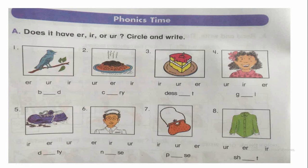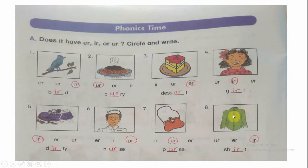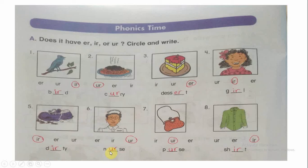Circle and write. Number one: Bird. Number two: Curry. Number three: Dessert. Number four: Girl. Number five: Dirty. Number six: Nurse. Number seven: Burst. Number eight: Shirt.